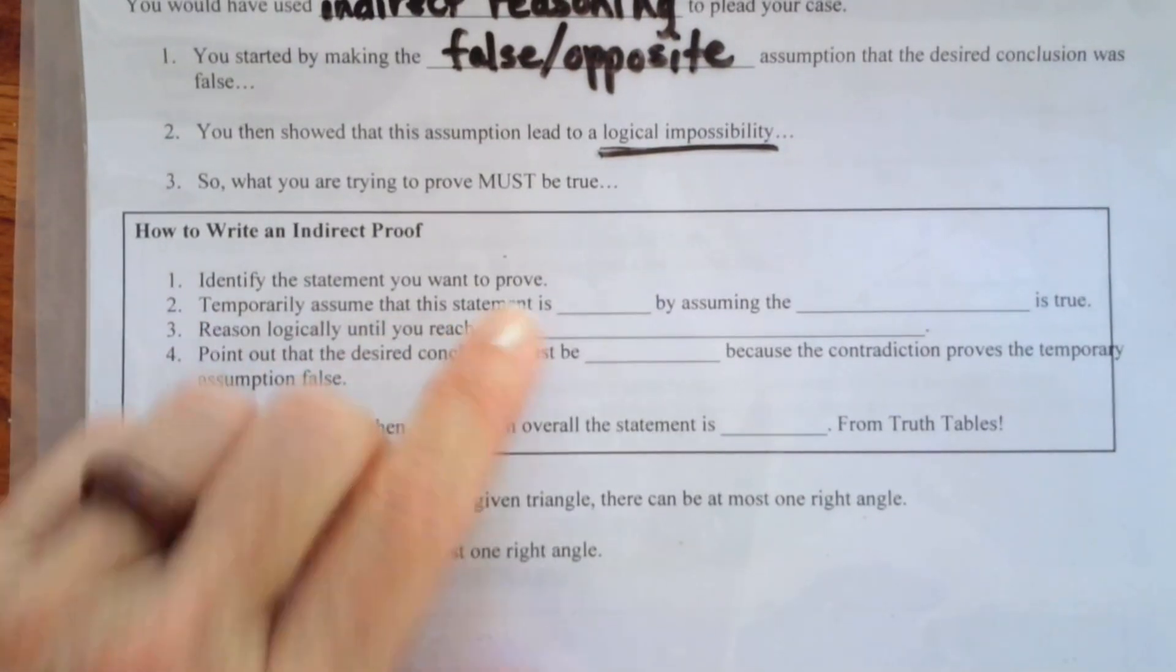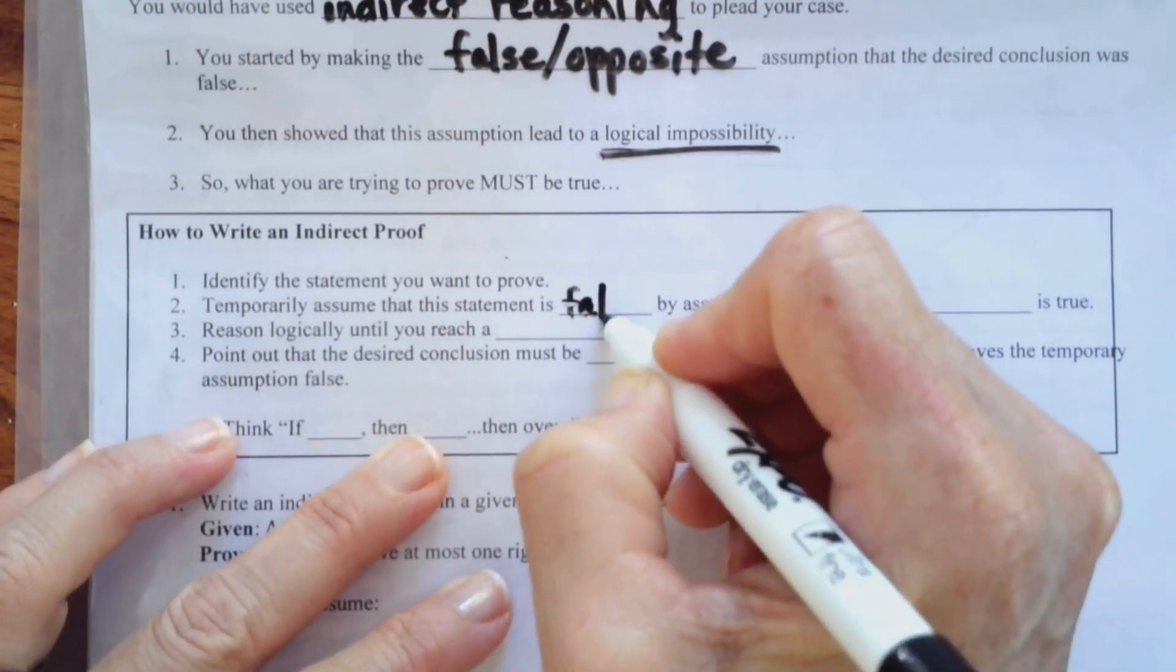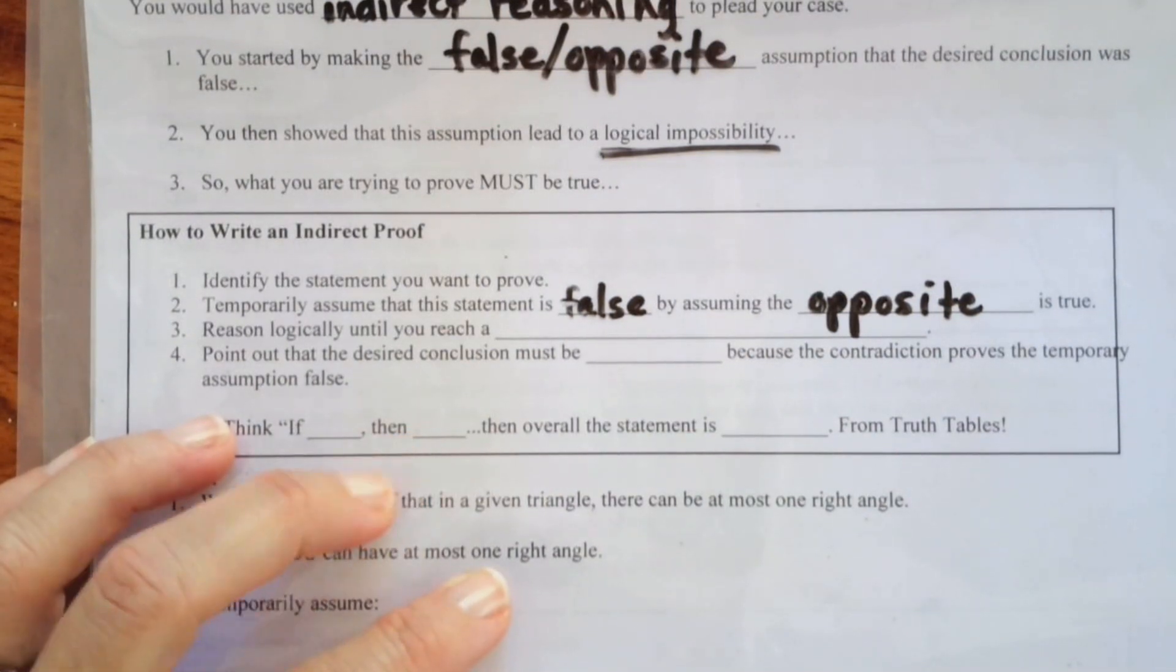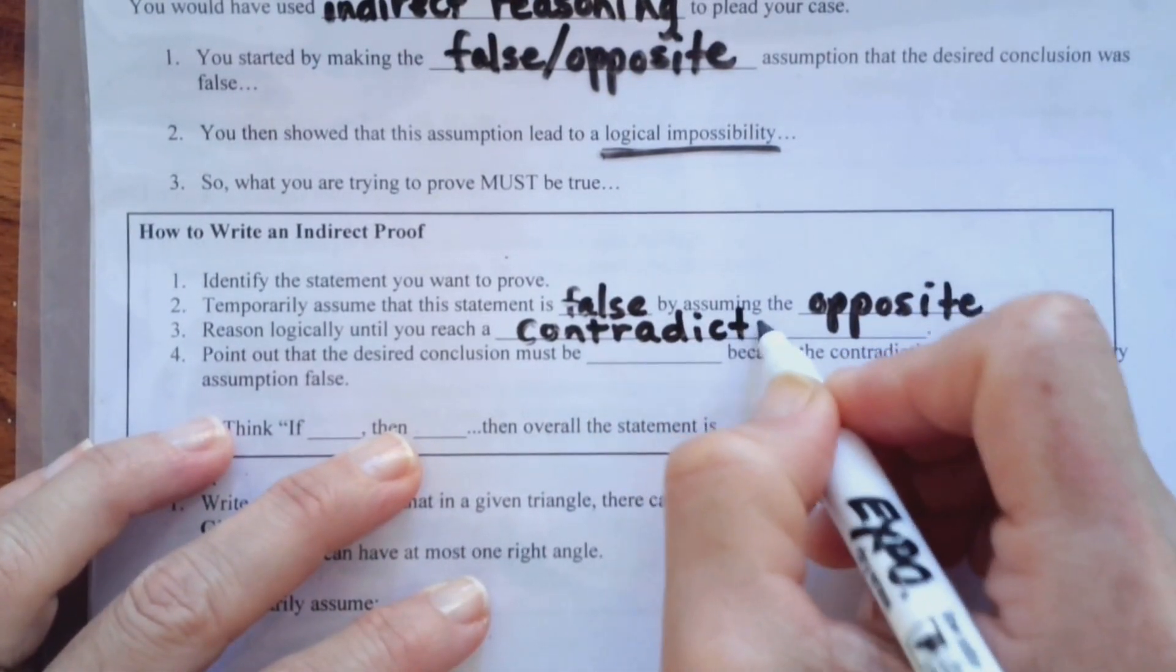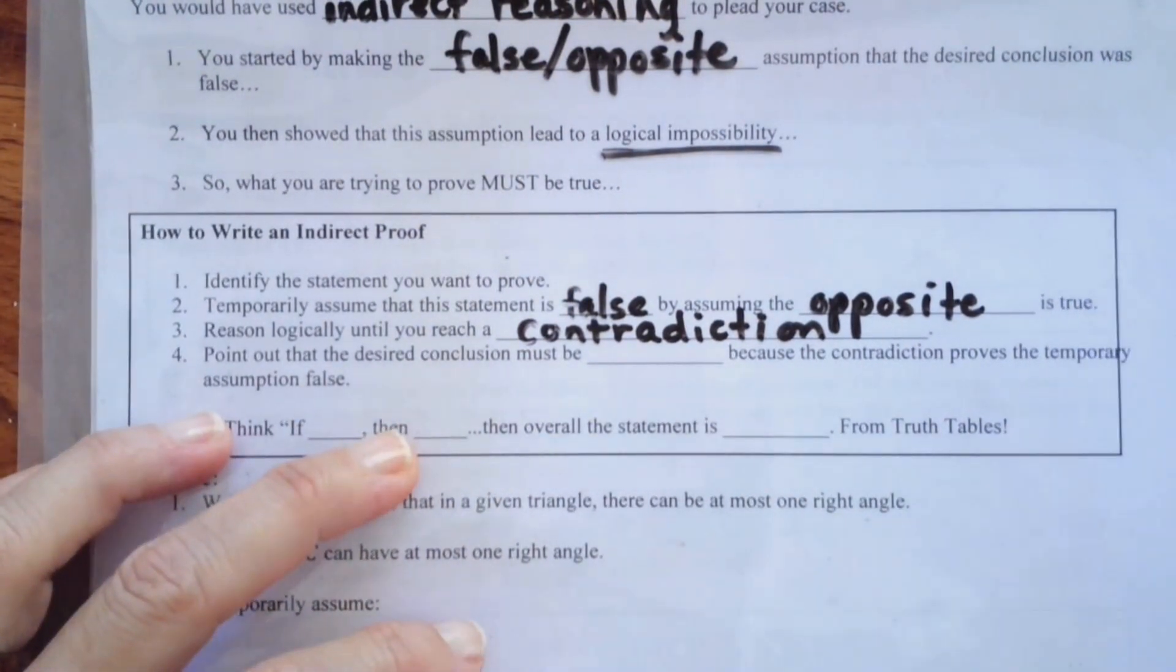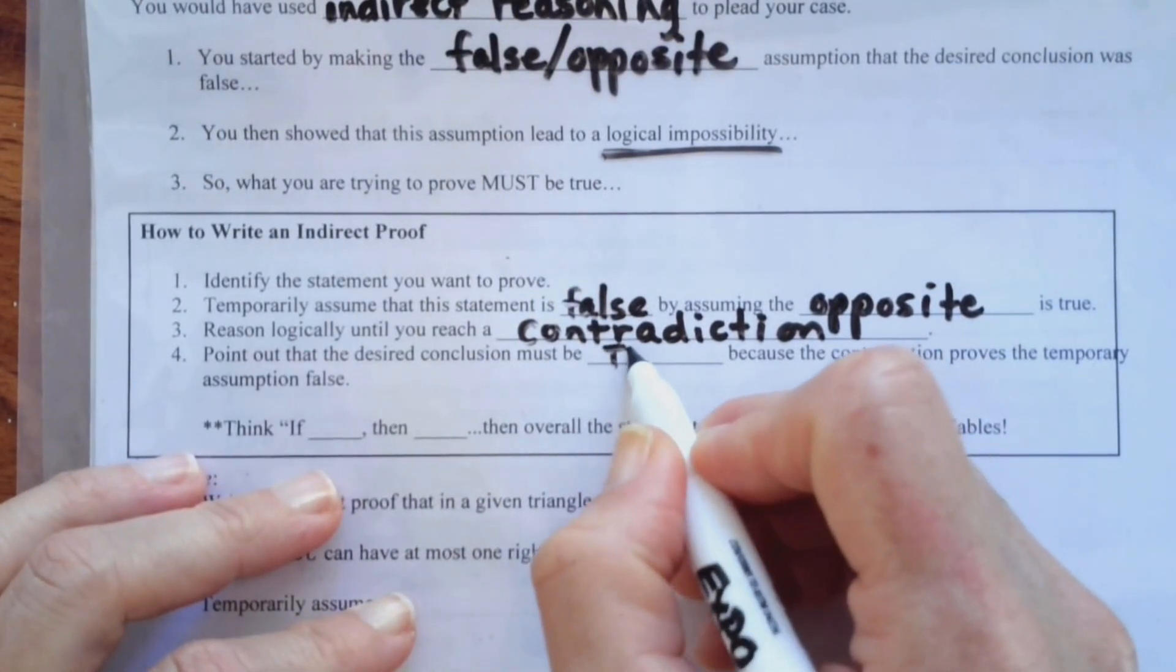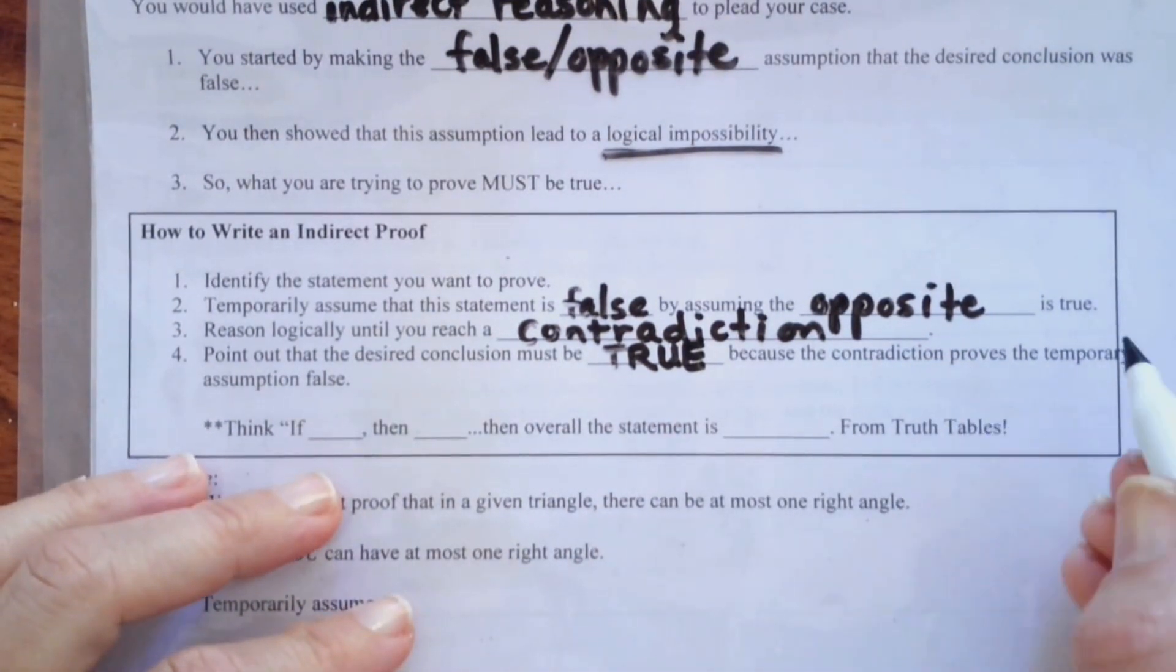First, you identify the statement you want to prove. And then, you temporarily assume that this statement is false by assuming the opposite. You reason logically until you reach what we call a contradiction. And you can think of this as an impossibility, contradiction. So, if you reach an impossibility with something false, you point out that the desired conclusion must then be true. Because the contradiction proves the temporary assumption false.